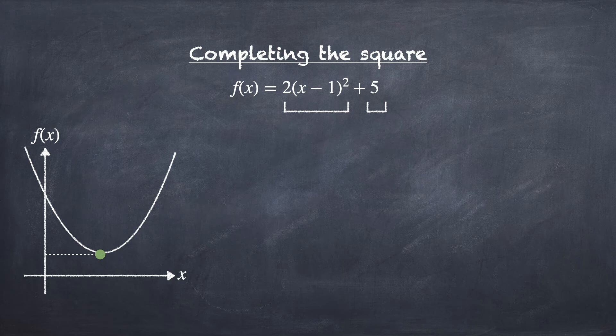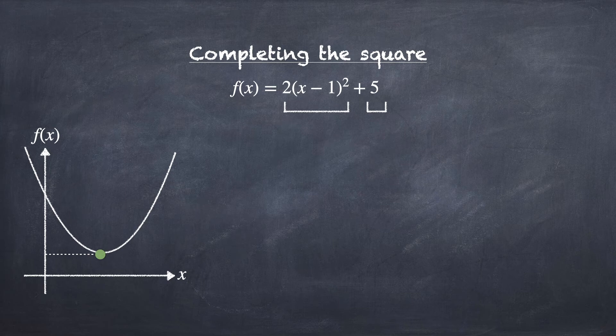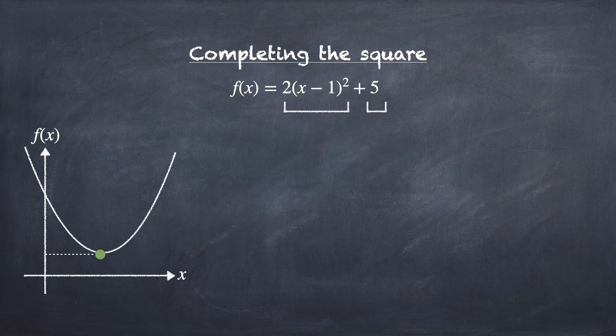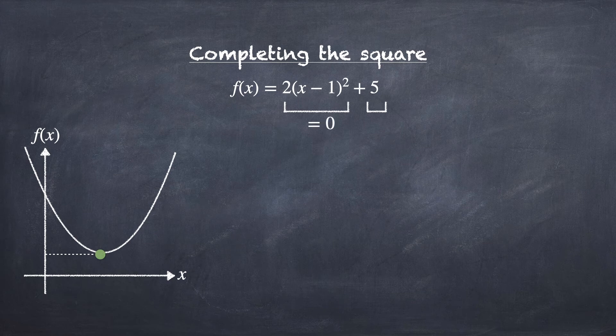We can't change the value of the second part, which is a constant. However, we can change the value of the first part. The first part can never be less than 0 because any number in the bracket, whether positive or negative, once we square it will turn positive. Therefore, the smallest it can go to is 0.